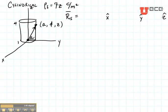Table 3 shows us that X is equal to R cosine of phi, Y is equal to R sine of phi, and Z is equal to Z.